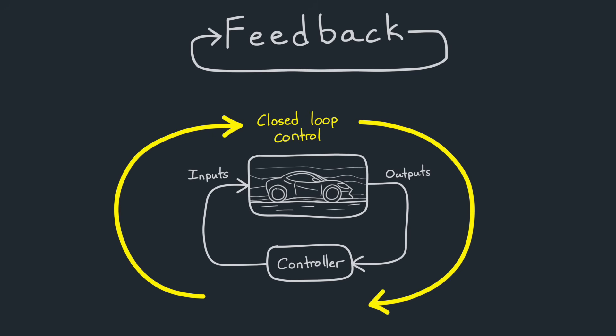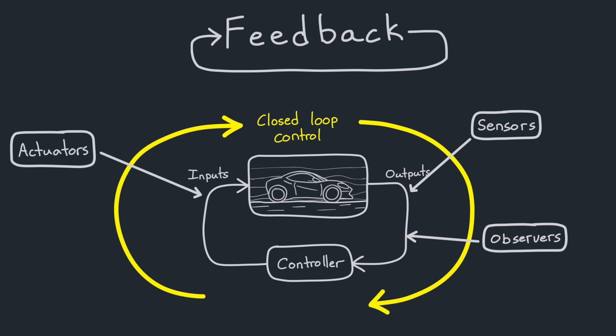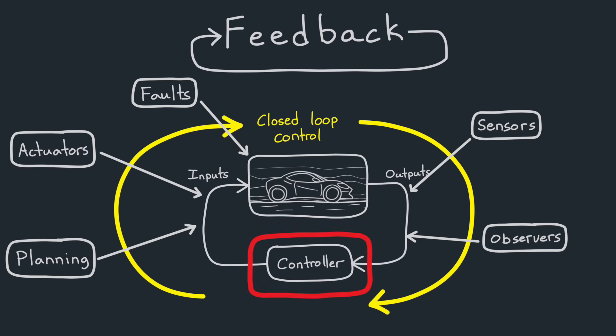Now there are several things that you have to design to achieve closed-loop control. For example, you need sensors to measure some quantity about your system. You might need an observer to estimate states that aren't directly measured. You'll need actuators that can change the system state. You might need a way to generate what you want your system to do, like follow a path. And then there's fault detection and responses and many others.